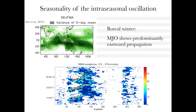In boreal winter, we have something called the Madden-Julian Oscillation, or the MJO. It is the dominant mode propagating eastward, as I showed in the earlier animation. Here I'm illustrating the concept of the MJO: x-axis is longitude, y-axis is time going upward, averaged between 10°S and 10°N — a channel over the equator. You can see signals of precipitation going eastward in time. That's the MJO.